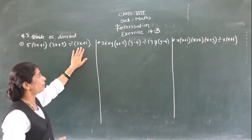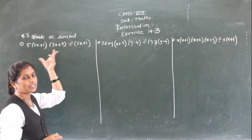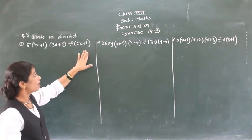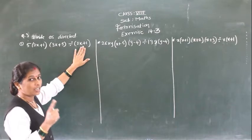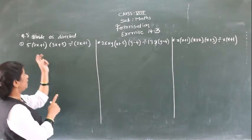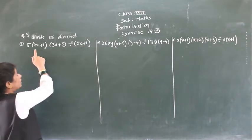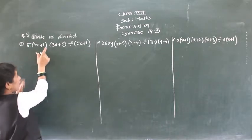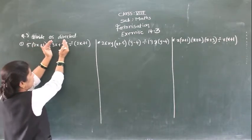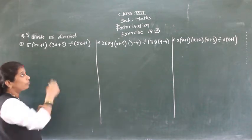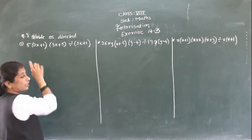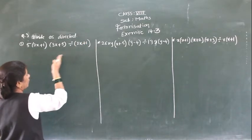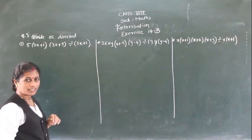If you look at this example properly, this is the divisor and this is the dividend. So (2x+1) is a factor here. Now all the numbers and brackets are multiplied to each other. So we can cancel out: (2x+1) gets cancelled.